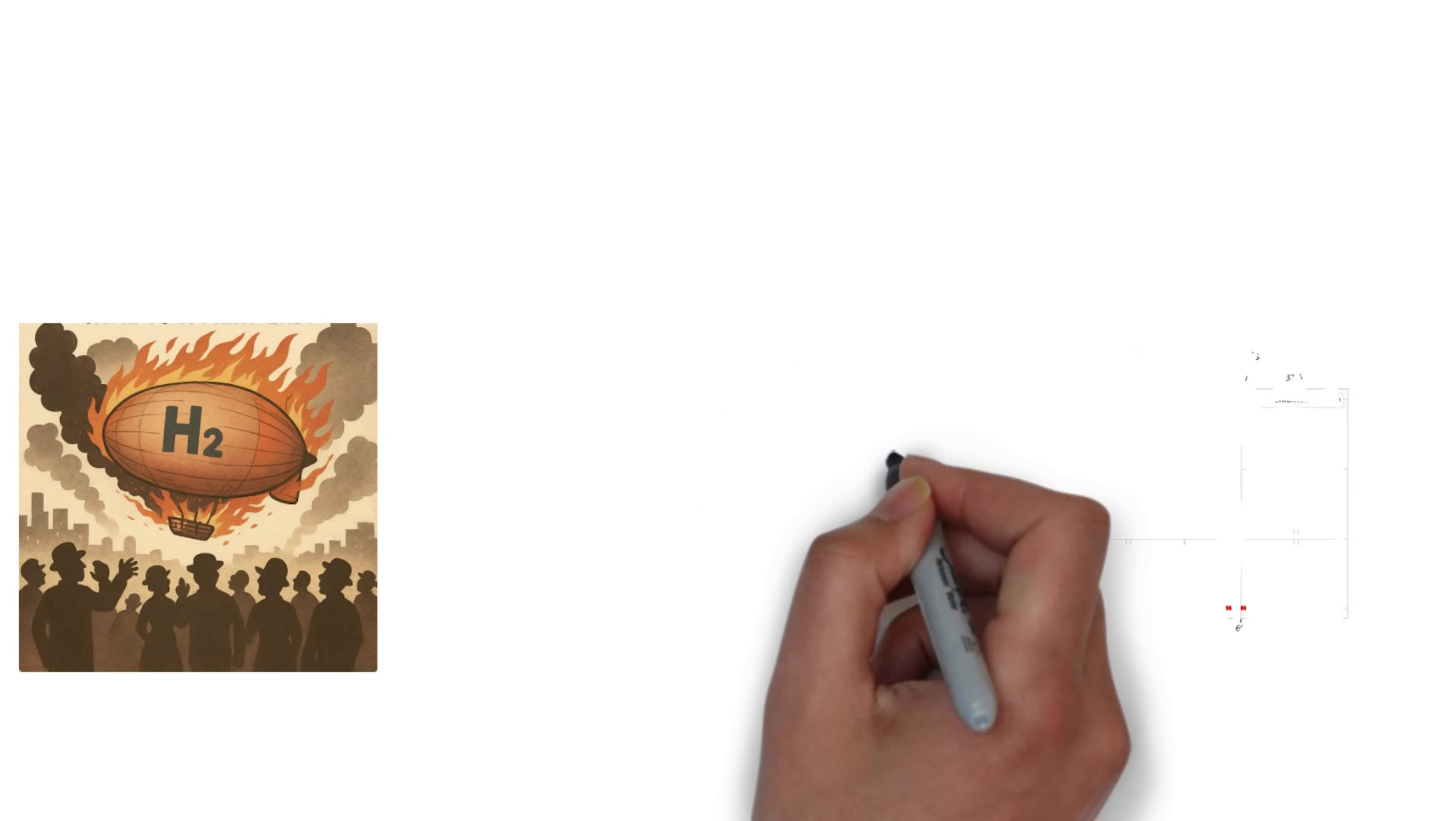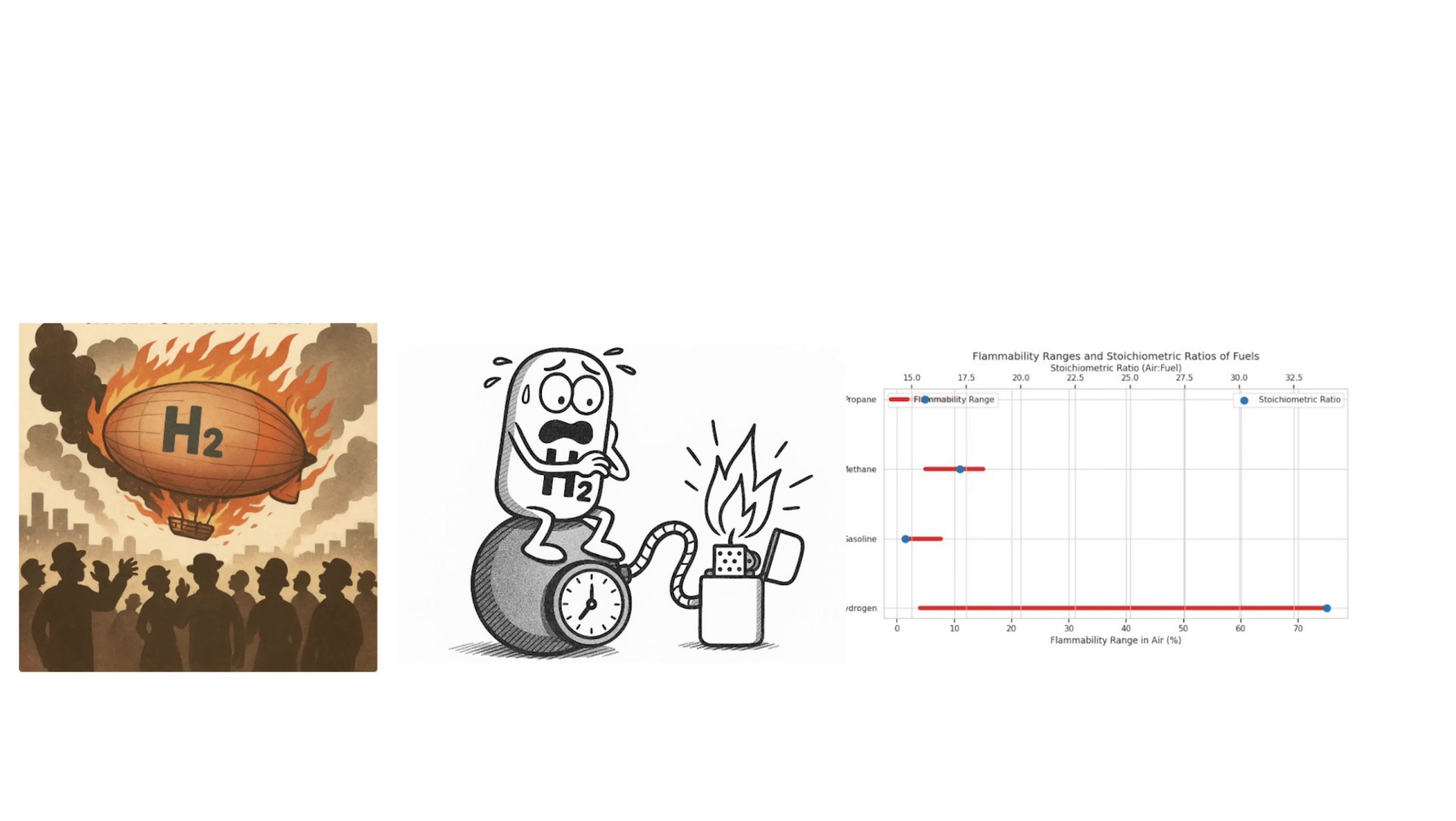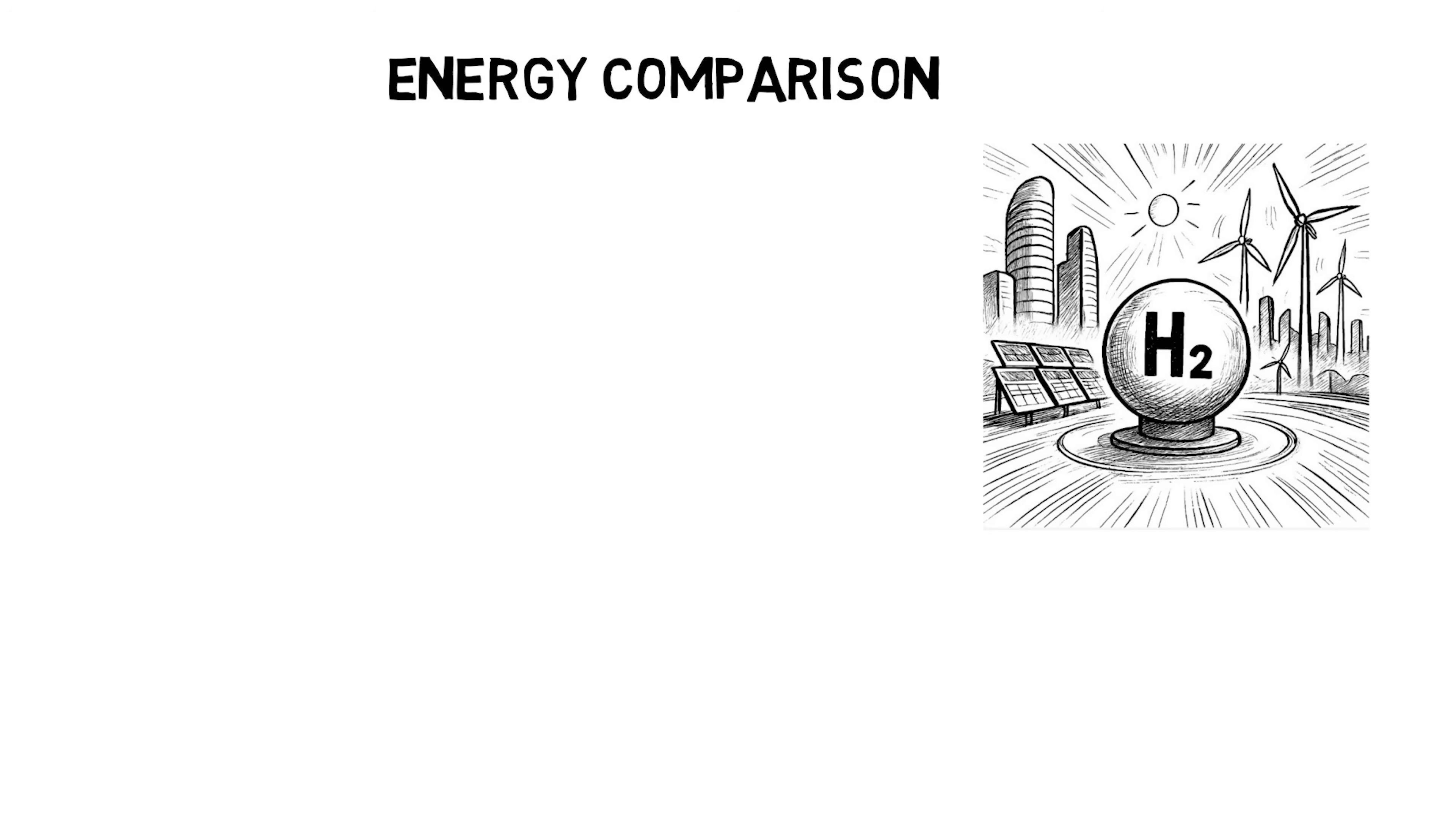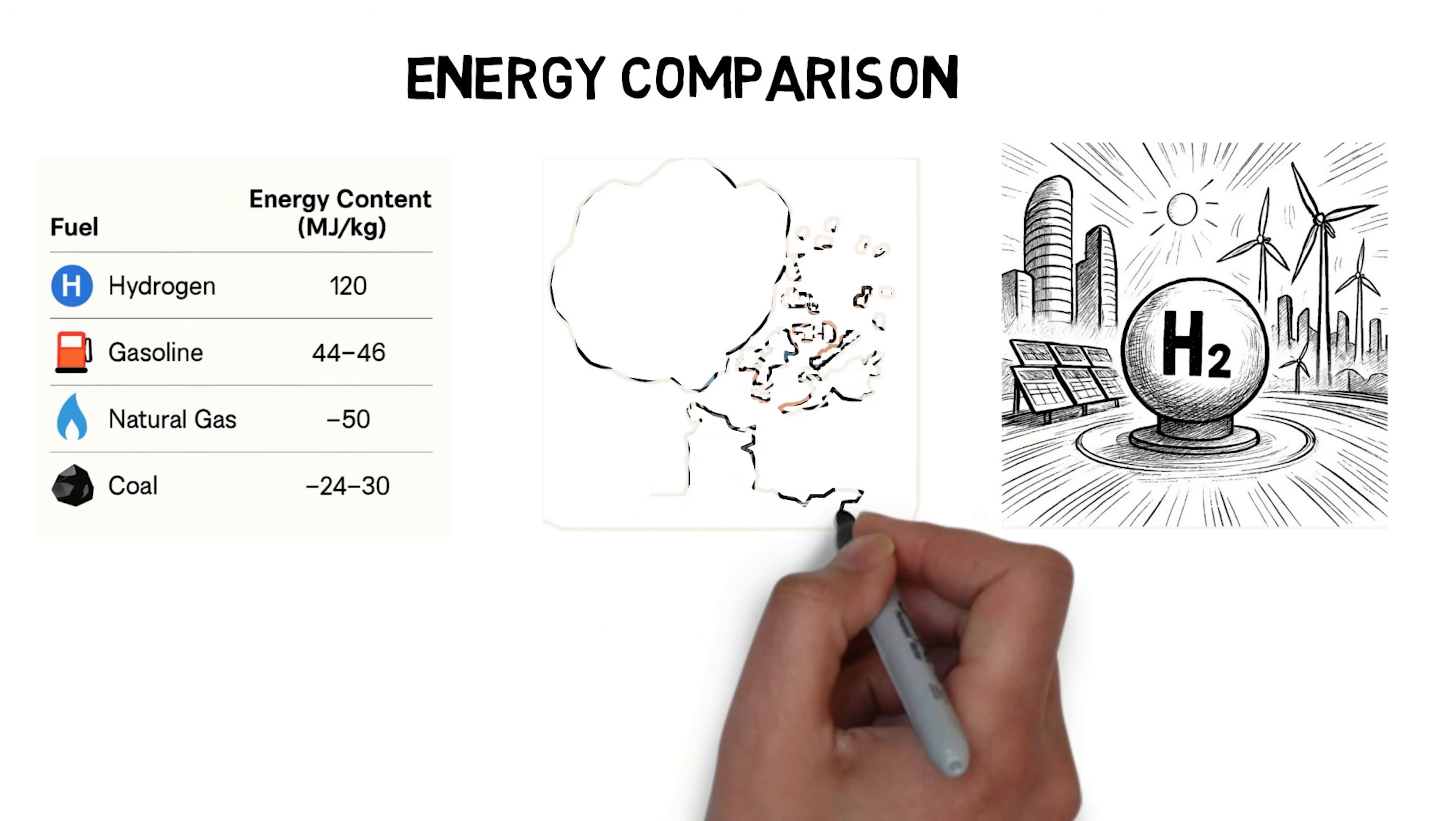But the danger was never hidden. Hydrogen's flammability is unmatched. It can ignite in air at concentrations as low as 4% and as high as 75%. No other fuel spans such a volatile range. Hydrogen once symbolized promise, then tragedy. But today, we revisit hydrogen not to lift airships but to power the future. Hydrogen has the highest energy content per kilogram of any fuel, nearly three times more than gasoline and five times more than coal. But has high energy per kilogram? It takes up a lot of volume unless compressed or liquefied.